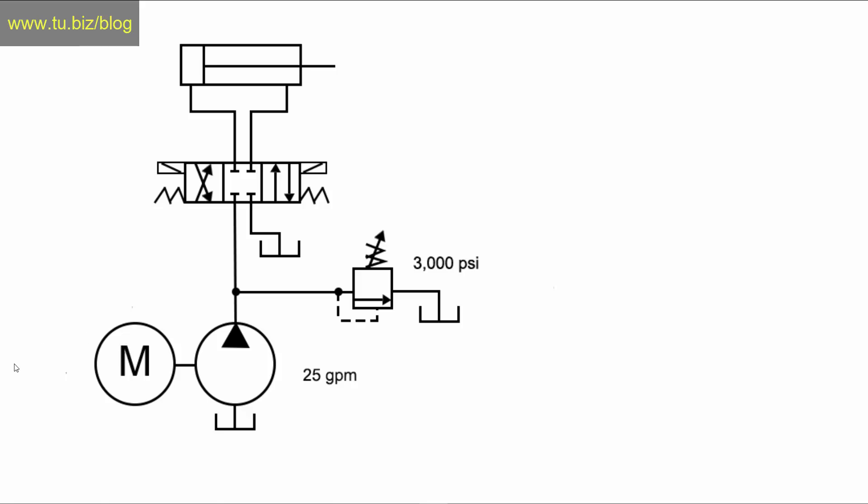In order to do that, we have hydraulic horsepower equals GPM times PSI divided by 1714.